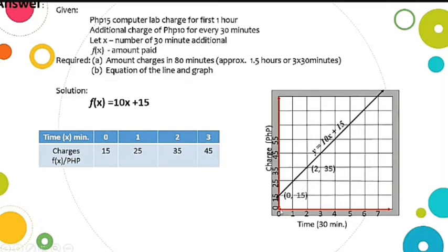If we graph it, this is our graph: 0, 15 and then 2, 35. The graph should always be a straight line, and the name of our graph is y = 10x + 15.